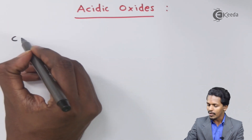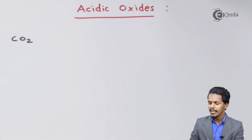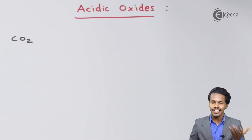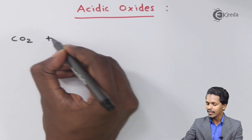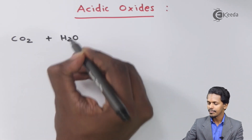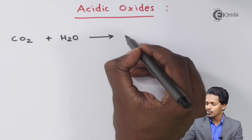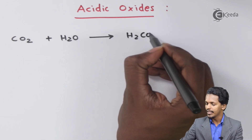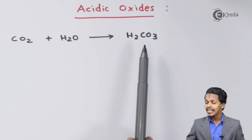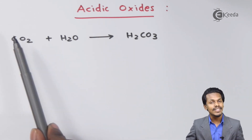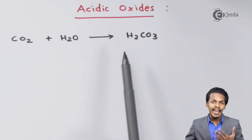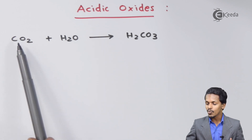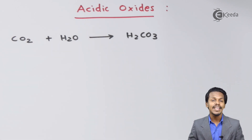The first example is carbon dioxide (CO2). Carbon is a non-metal, so if this oxide of carbon combines with water, the product formed is H2CO3, which is known as carbonic acid. Since this oxide produces an acid, CO2 is acidic in nature and is known as an acidic oxide.